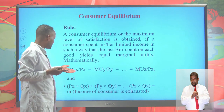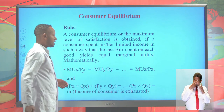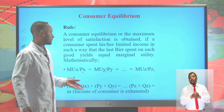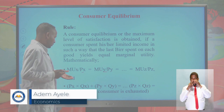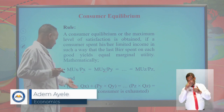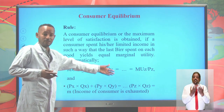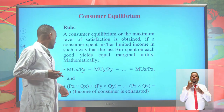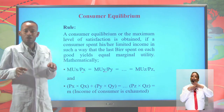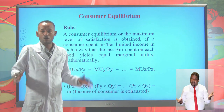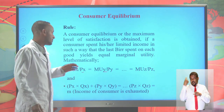The second precondition is that income must be fully exhausted: Px·Qx + Py·Qy (+ Pz·Qz) = Income. If there is money remaining in the pocket, we cannot be at the maximum level of satisfaction in economics. So the income must be exhausted.